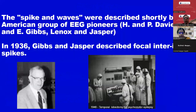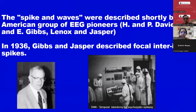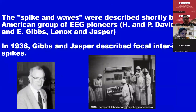The spike and wave were described shortly by the American group of EEG pioneers — Davis, Gibbs, Lennox, and Jasper. In 1936, Gibbs and Jasper described focal interictal spikes.